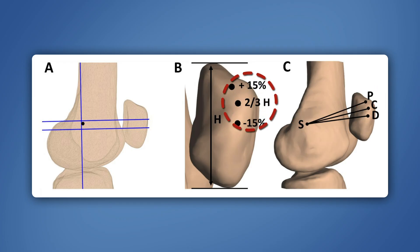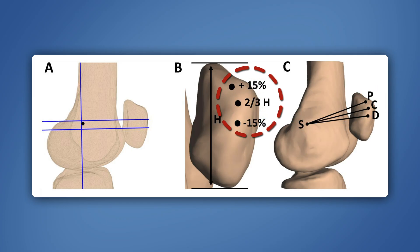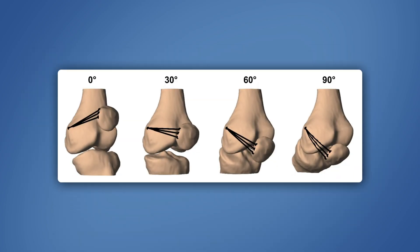They then calculated the percent changes in MPFL length in relation to knee anatomical features. The proximal fiber was the longest in full extension, and its median length decreased by up to 6% at 90 degrees of flexion. The median length of the central fiber decreased by 2.8% during flexion, and no elongation was observed. In contrast, the median length of the distal fiber decreased slightly upon initial flexion,